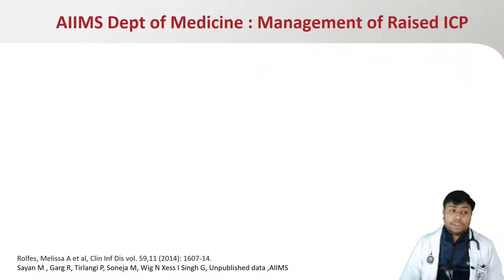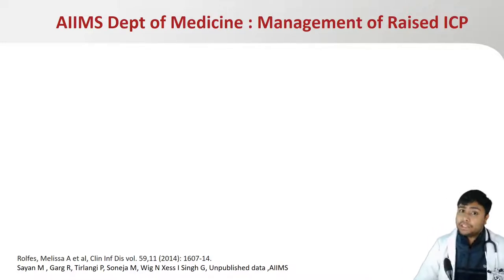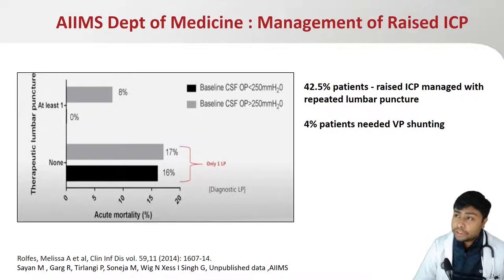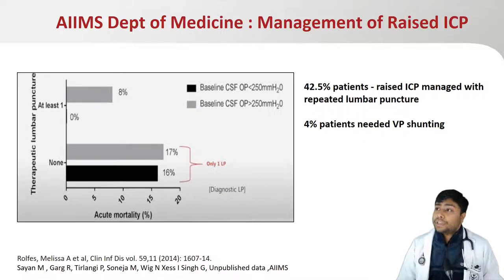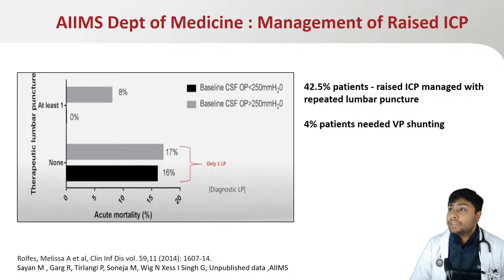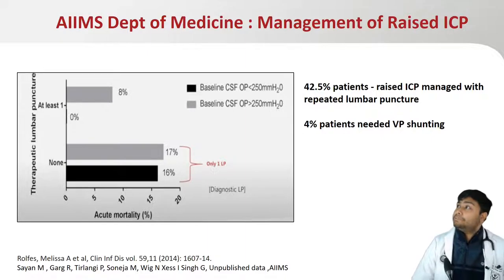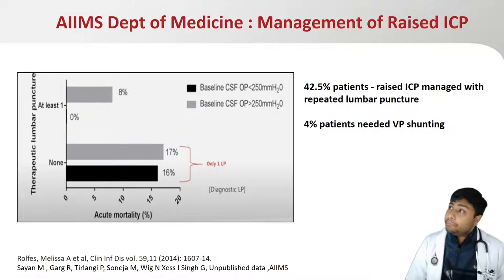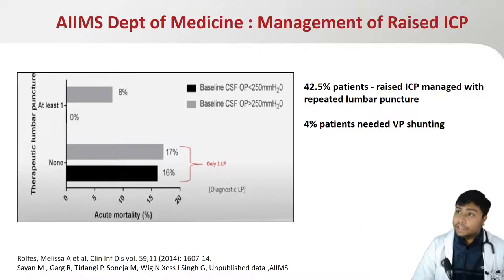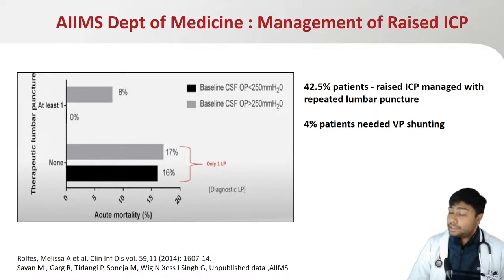Management of raised intracranial pressure is another important aspect alongside antifungals. Studies have shown that in immunosuppressed patients with baseline CSF pressure greater than 25 cm water, even a single repeat lumbar puncture after the diagnostic tap can reduce mortality from 17% to 8% — almost 50%. In our series, 43% of patients required repeated lumbar puncture and only 4% required VP shunt. Dexamethasone and other medical management have very limited role in managing raised CSF pressure in these patients.